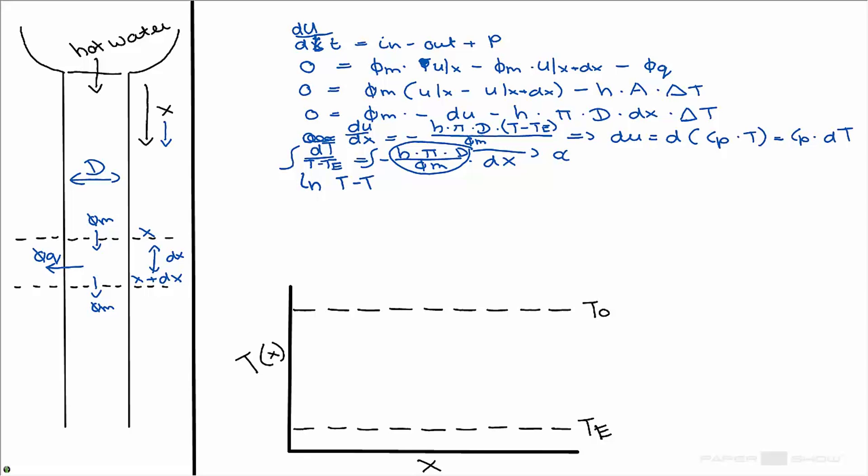So the solution of this differential equation is minus alpha times x plus a constant. You should be able to do this, we've done this a number of times actually.